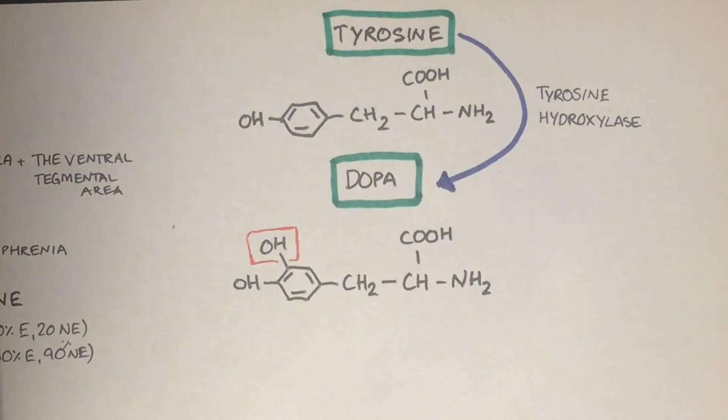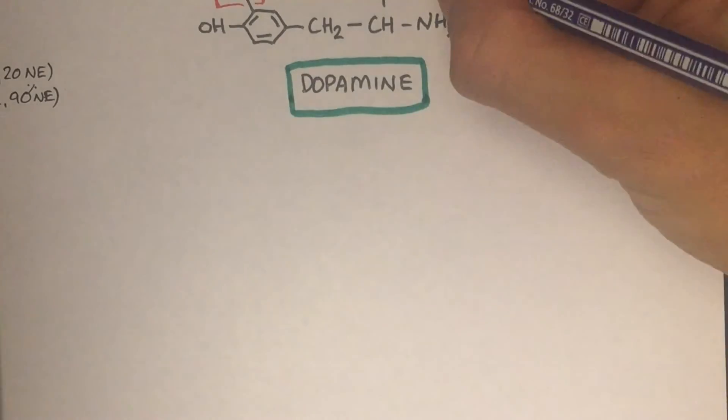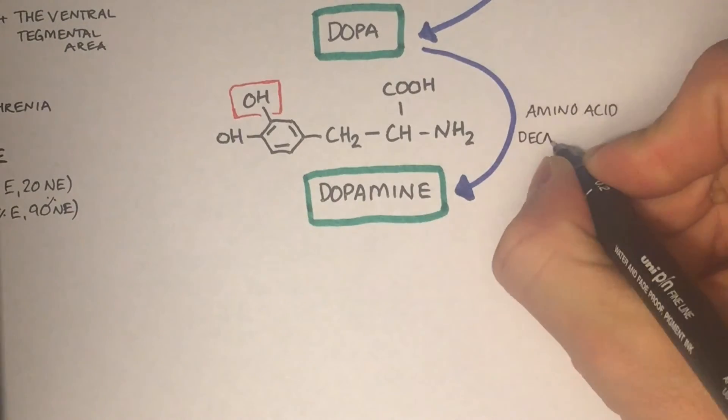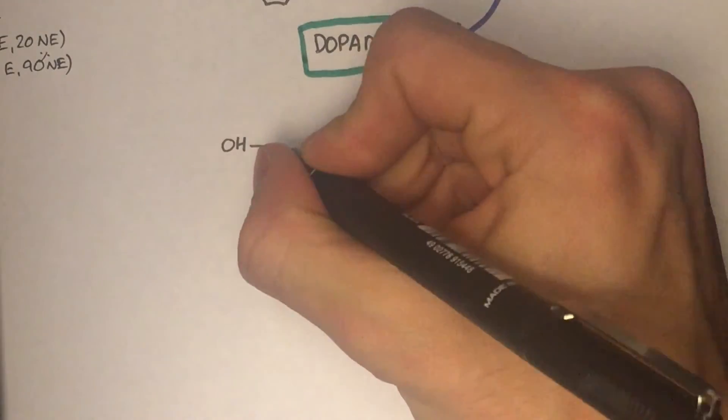Dopa is then converted into dopamine by the enzyme amino acid decarboxylase which removes the carboxyl group.